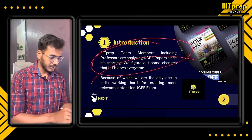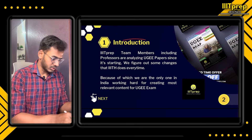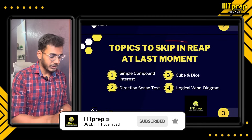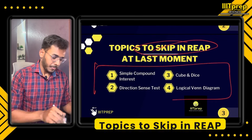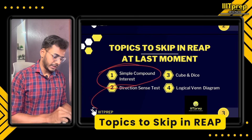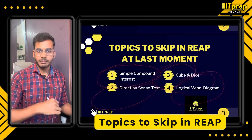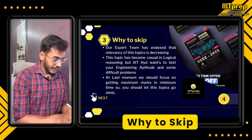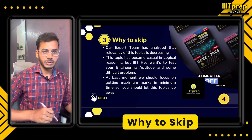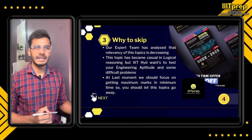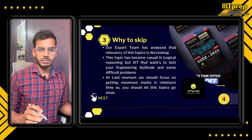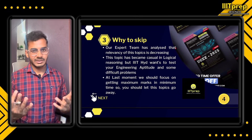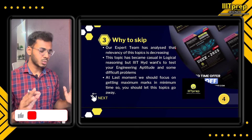The ID prep team has been analyzing all these things regarding topics to skip. At the last minute, you can skip the topics of simple direction sense, logical Venn diagram, because the relevancy of these topics is decreasing — Triple IIT gives only one question from these. That's why you can skip them and put your efforts where you can get the maximum score.